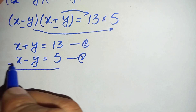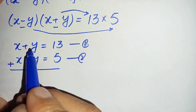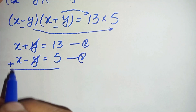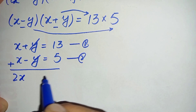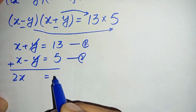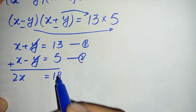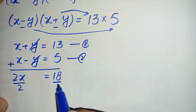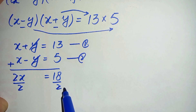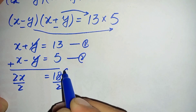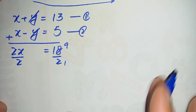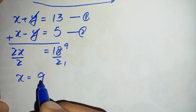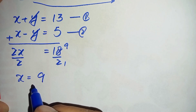We will add these two equations. The positive y and negative y cancel out, and x plus x is 2x, equal to 13 plus 5 which is 18. Dividing both sides by 2, we get x is equal to 9.